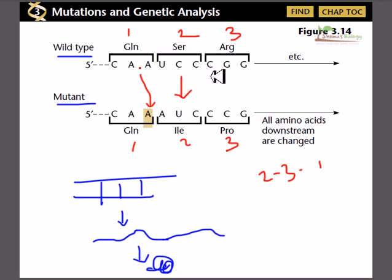But the second code, it was UCC, but in this case it is AUC. As a result, it was coding for serine. Now it is coding for isoleucine. In the next case it was coding for arginine. Now it is coding for proline.